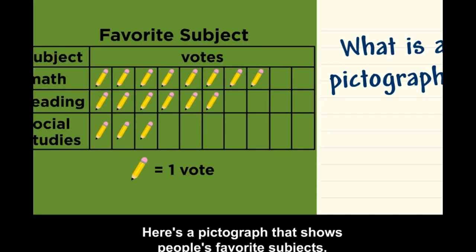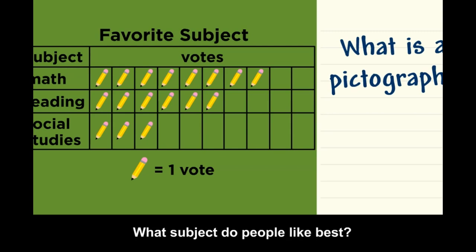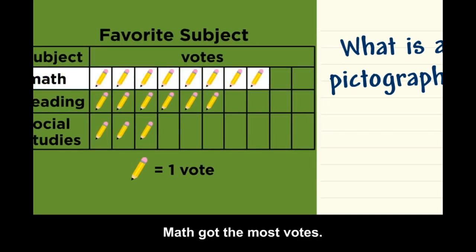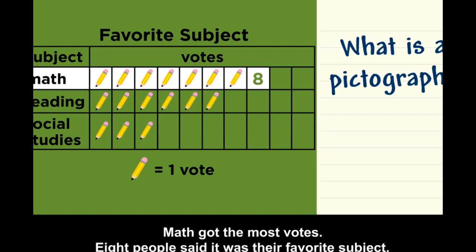Here's a pictograph that shows people's favorite subjects. What subject do people like best? Each pencil stands for one vote. Math got the most votes — eight people said it was their favorite subject.